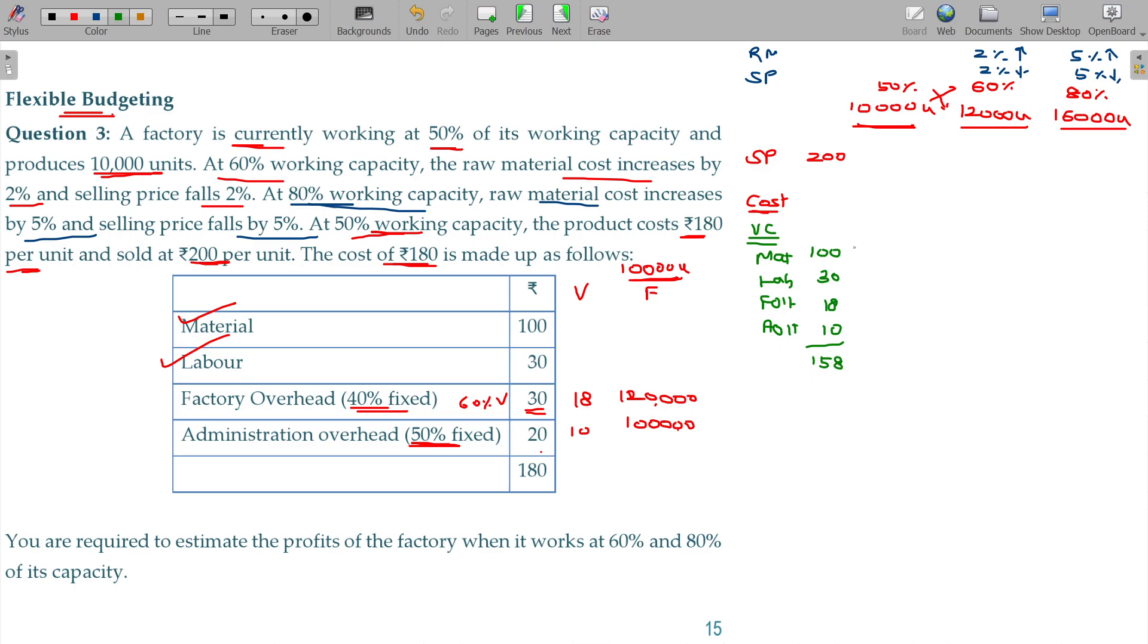And for 10,000 units, 200 into 10,000. So if I cut the three zeros, that value is 2000, 2000 thousands. Material is 1000.